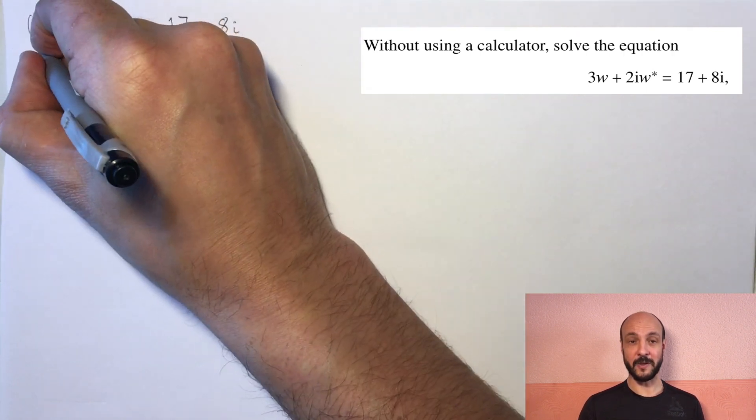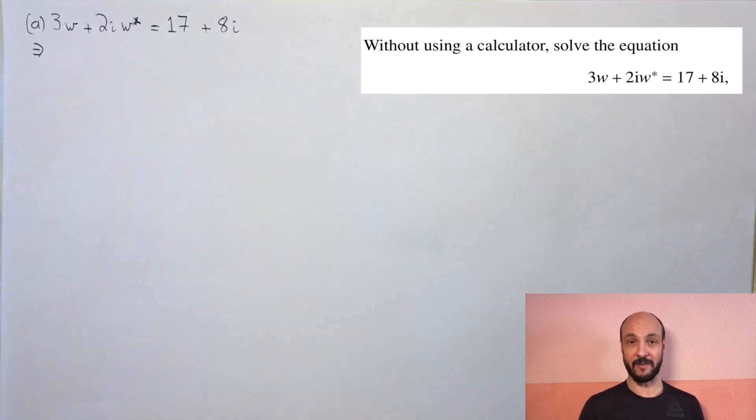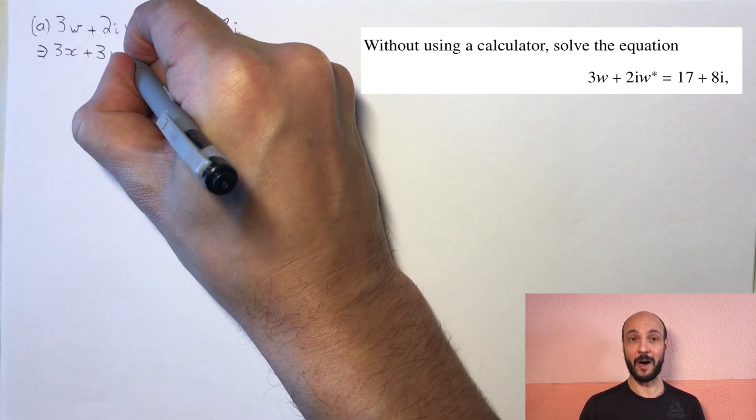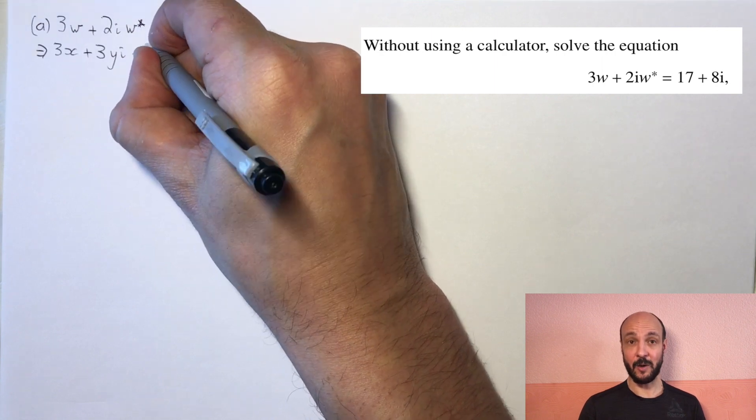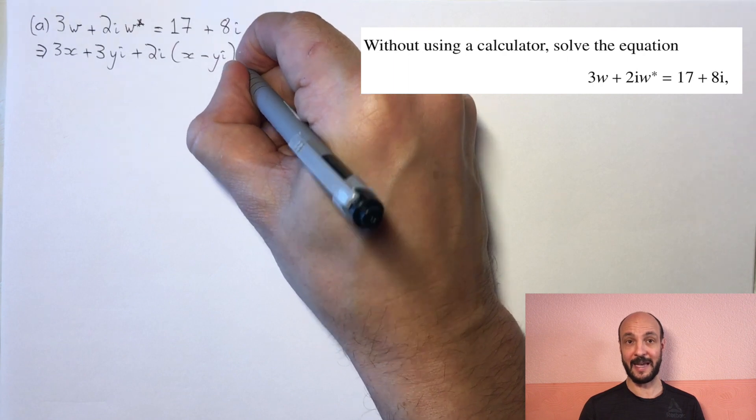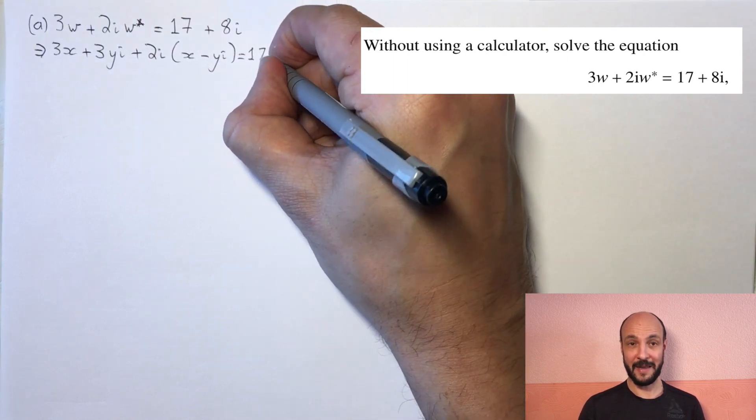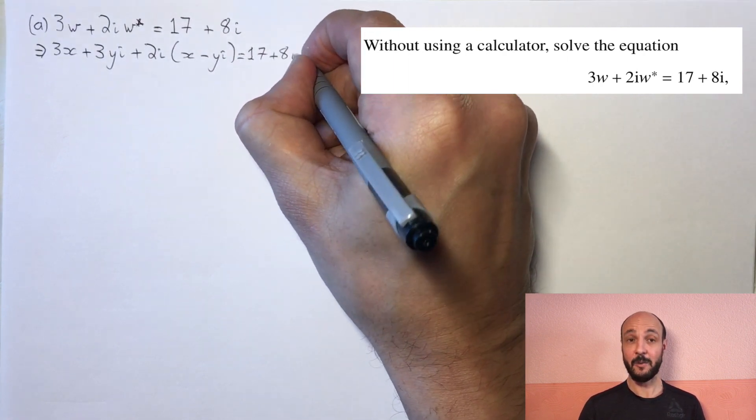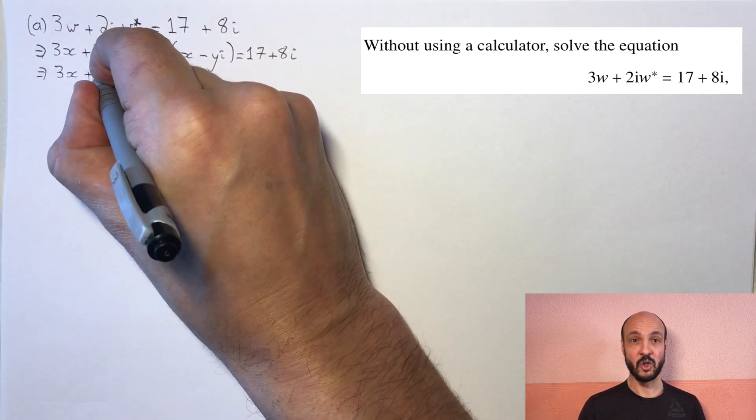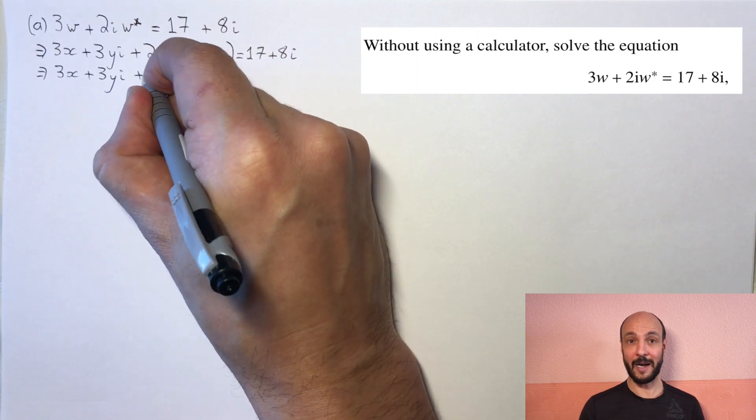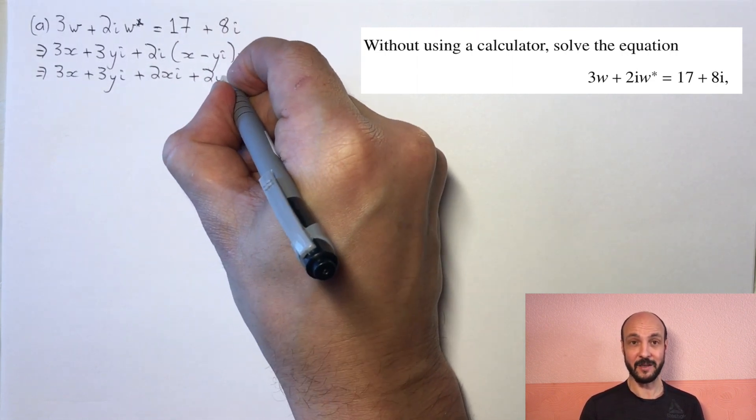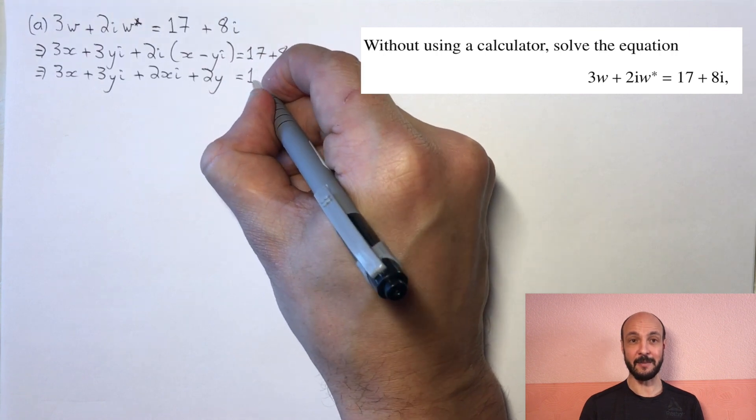So we've got 3w plus 2iw star equals 17 plus 8i. We can write that as 3x plus 3yi plus 2i times by x minus yi equals 17 plus 8i. And then if we expand the brackets on the left-hand side, we get 3x plus 3yi plus 2xi plus 2yi, because our i squared gives a minus 1 that cancels with the other minus, equals 17 plus 8i.